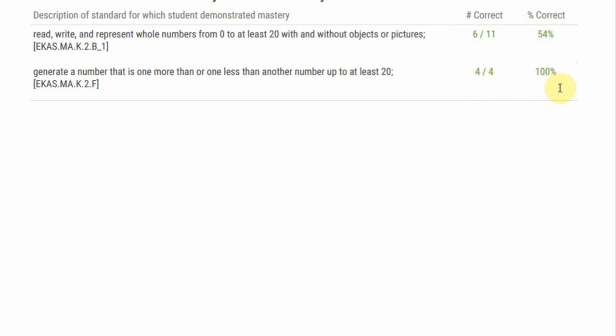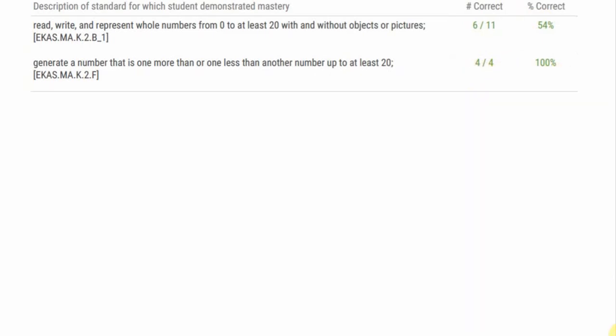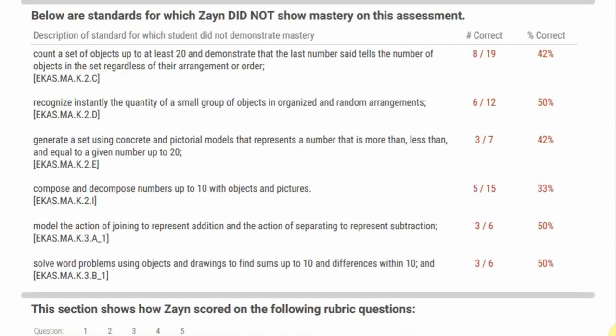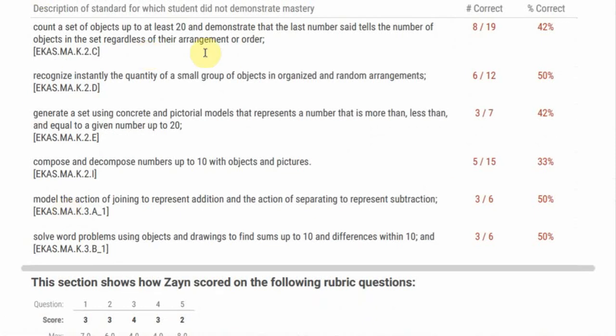4 out of 4 correct, that showed 100% just in that. But then it would also show where the student did not show mastery. For example, counting up to 20, that's 8 out of 19, and that was only 42 percent were correct. Recognizing the quantity of small group objects. And it actually tells you exactly what it is that the student did not master and what they need to work on.